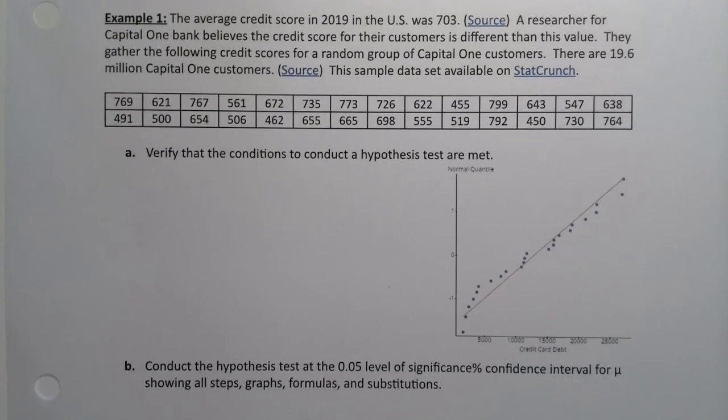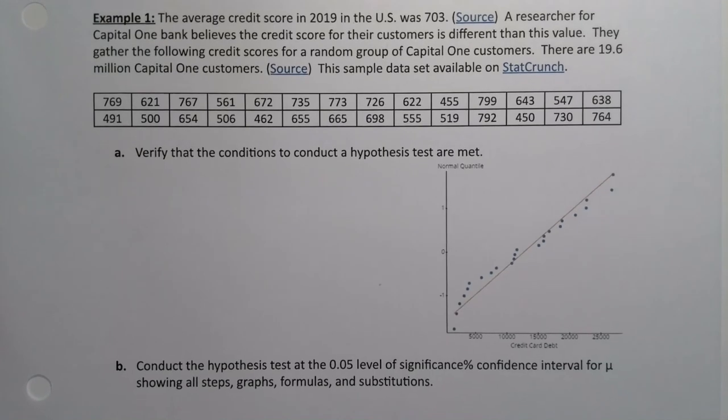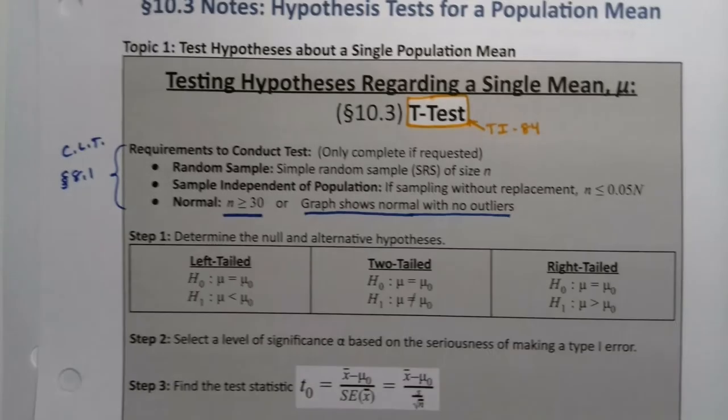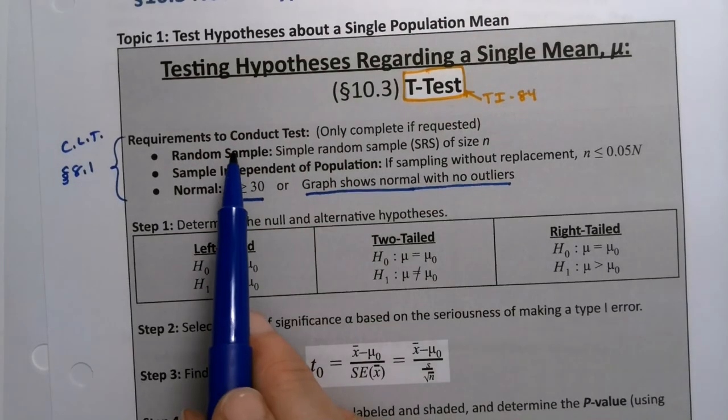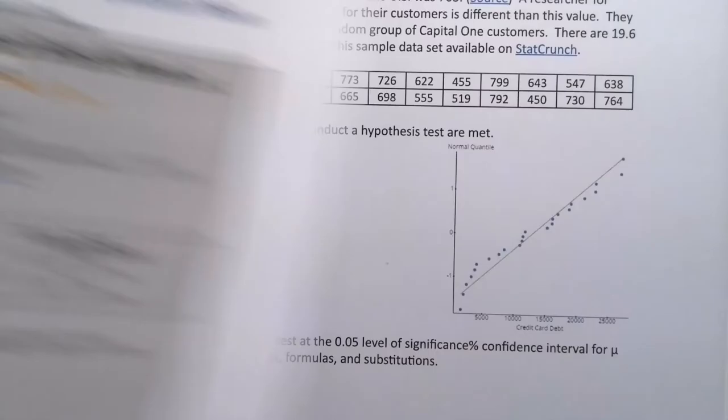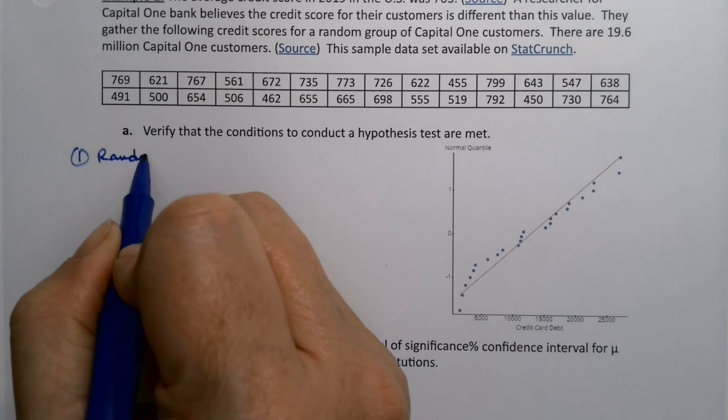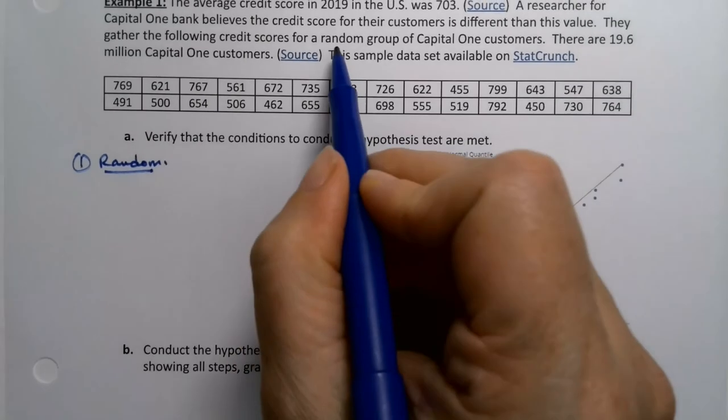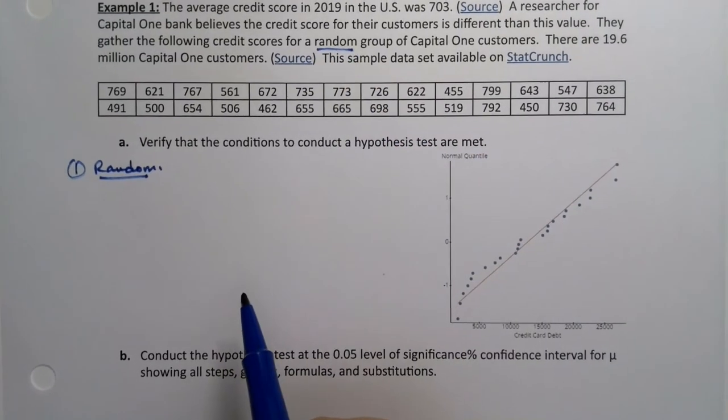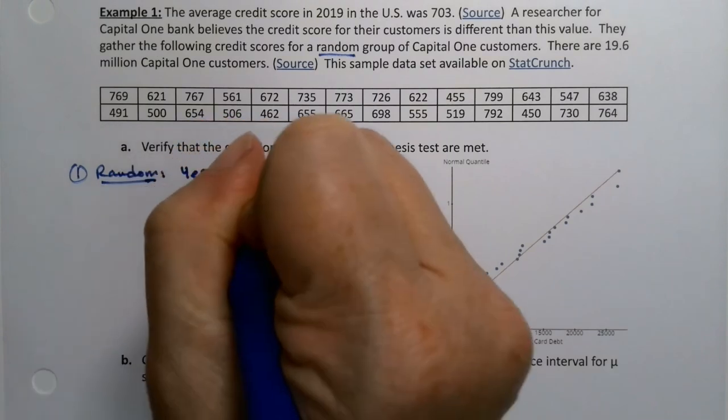All right, now, we want to first verify that the conditions to conduct a hypothesis test are met. All right, those conditions would be, of course, the same ones that we learned from the central limit theorem. We need random, independent of the population, and normal. All right, so let's start with number one, random, the easiest one by far, because it's given. If it's not given, it's going to be safe to assume it, because we can't really do anything if it's not. So this would be yes, given.